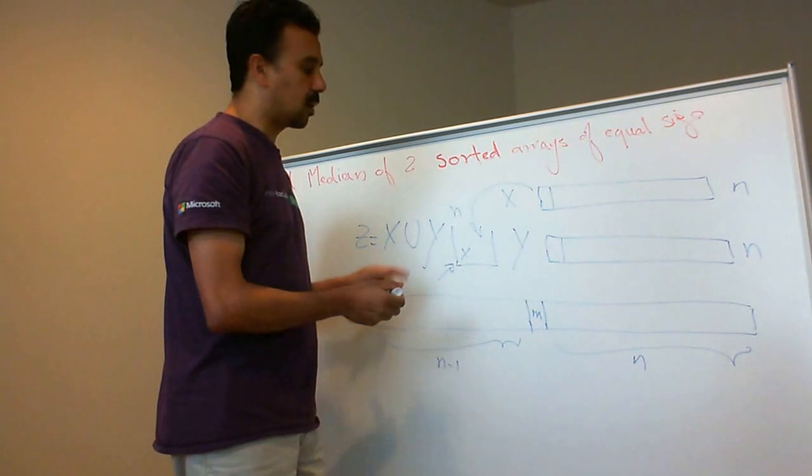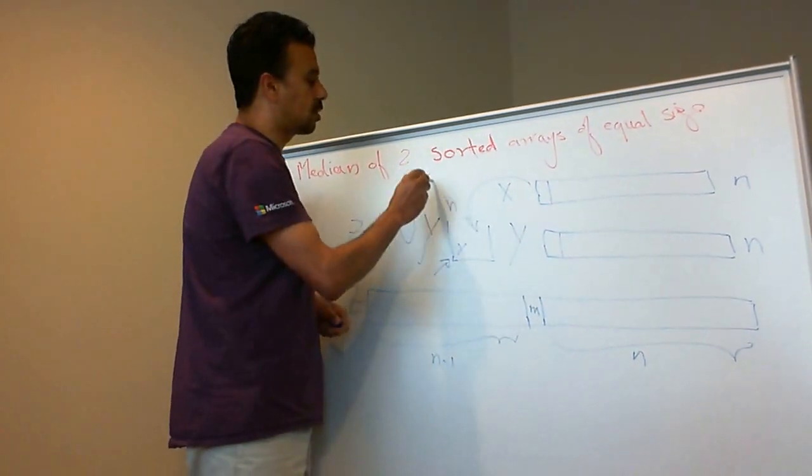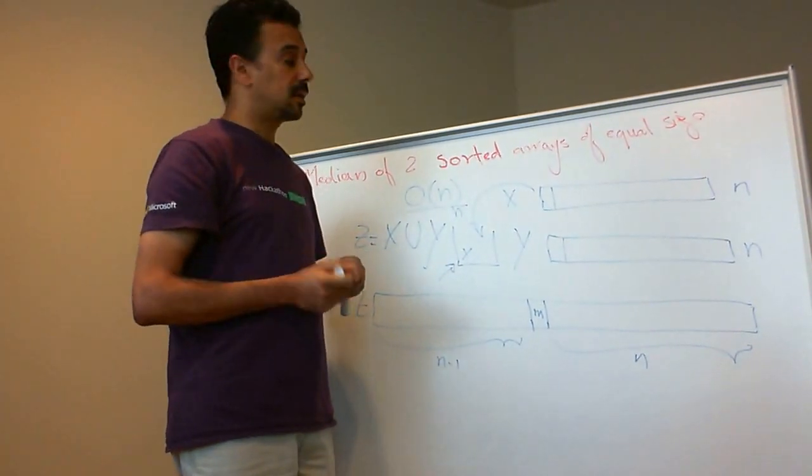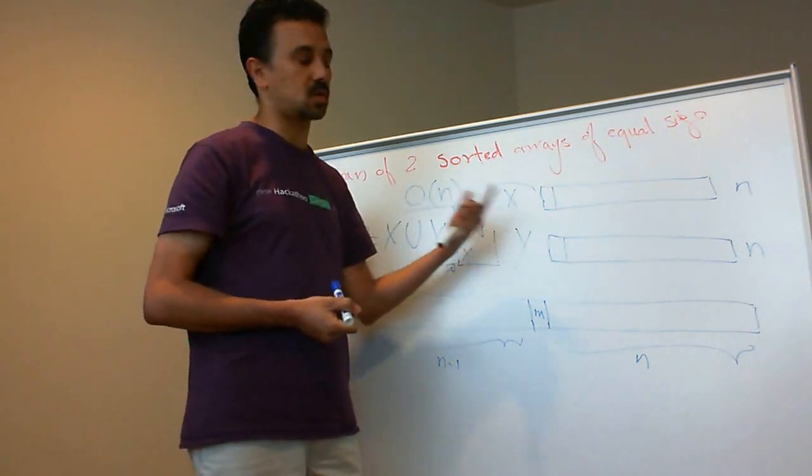Now, what is the runtime of this algorithm? It's O(n). And can we do better? Notice that the keyword here is sorted, both arrays are sorted.